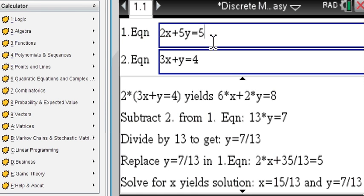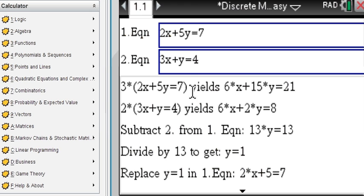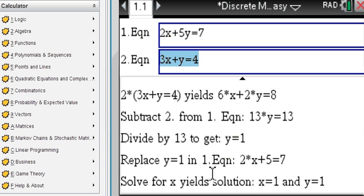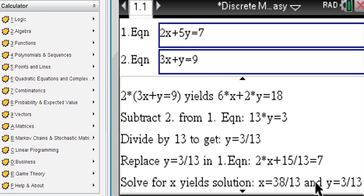Enter both equations using x and y. And as you change the equation, you immediately get to see the correct steps here until you arrive at the final answer, which in this case is x is 1 and y is 1. Notice if I change a 4 to a 9, your answer changes immediately and so do your steps.